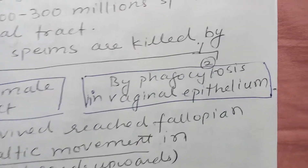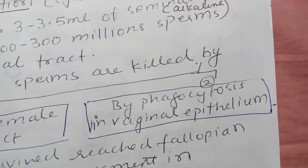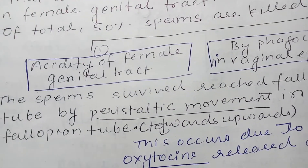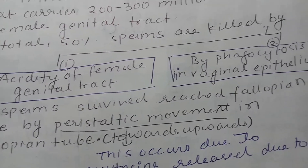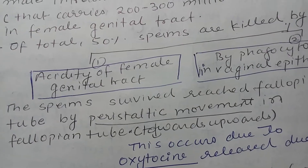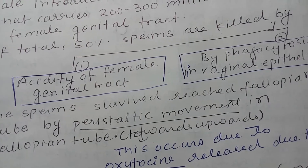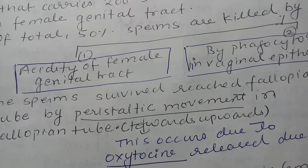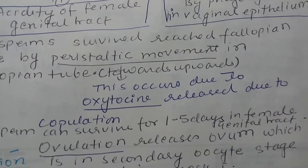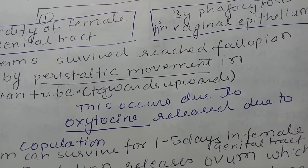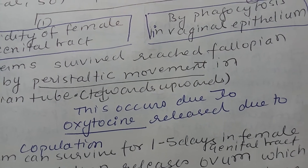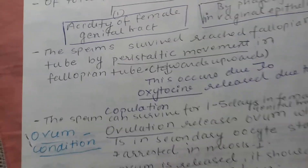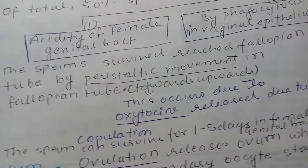Out of 200 to 300 million sperm, about 50 percent are killed either by the acidity of the female genital tract or by phagocytosis in the vaginal epithelium. Whatever number of sperm survive, they reach the fallopian tube by peristaltic movement. Since the fallopian tube is situated upward, the sperm need to move upward, and this movement is regulated by the hormone oxytocin, which is released during copulation.